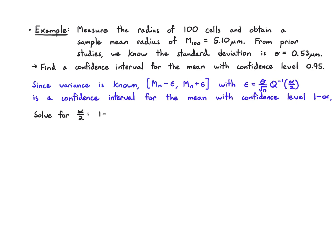So the first thing we do is solve for alpha over two. One minus alpha here is 0.95. That tells us that alpha is 0.05 and alpha over two is 0.025.